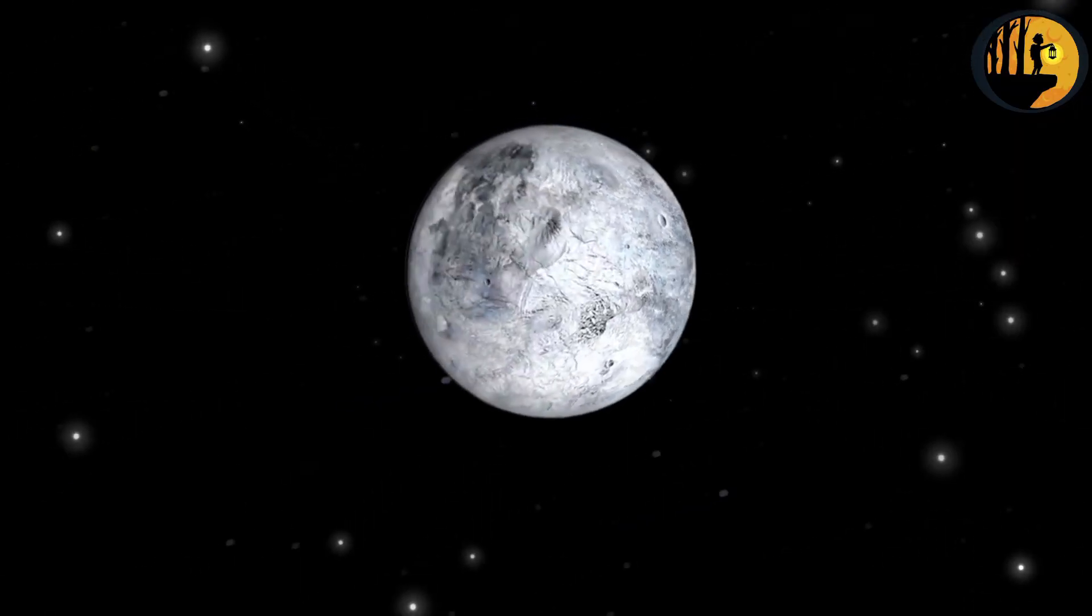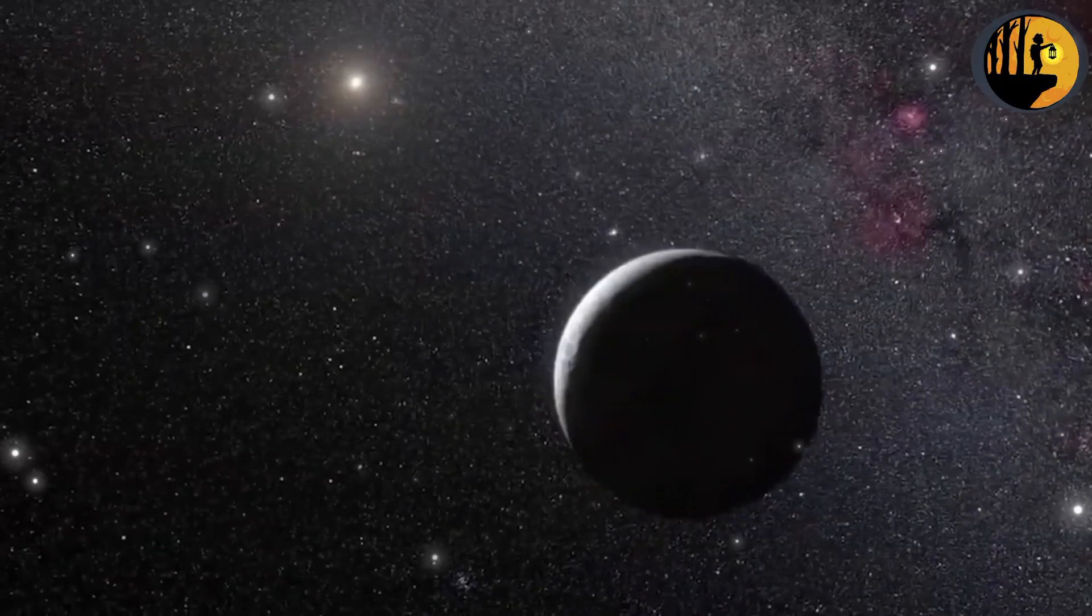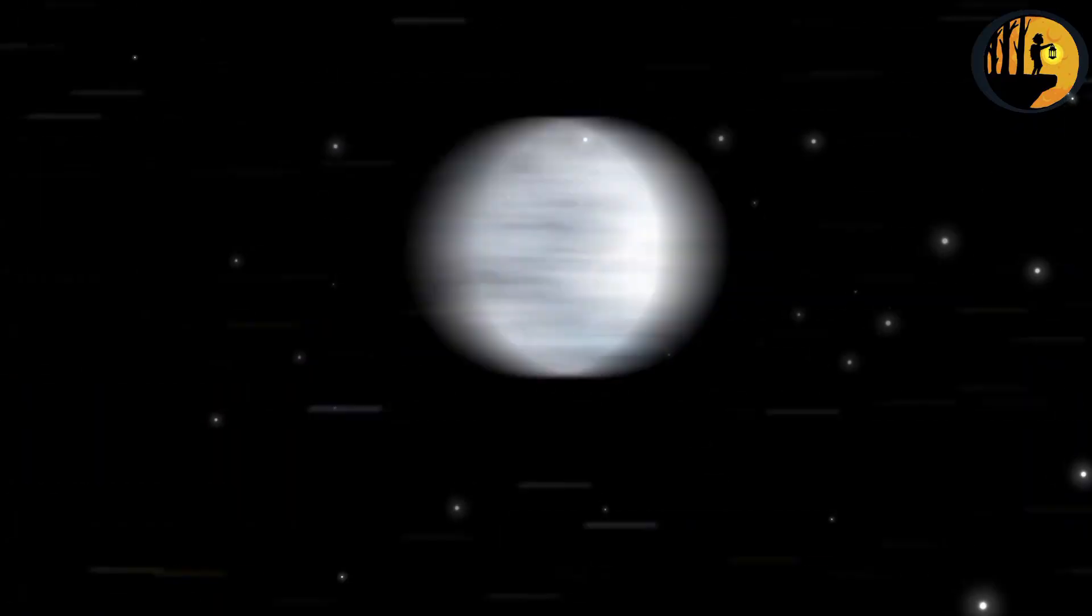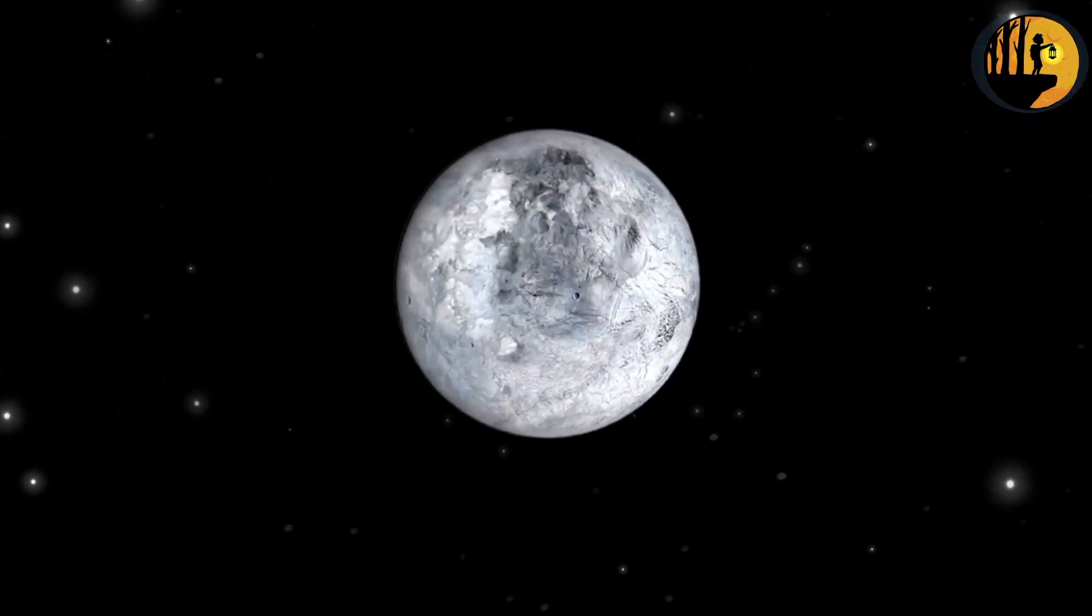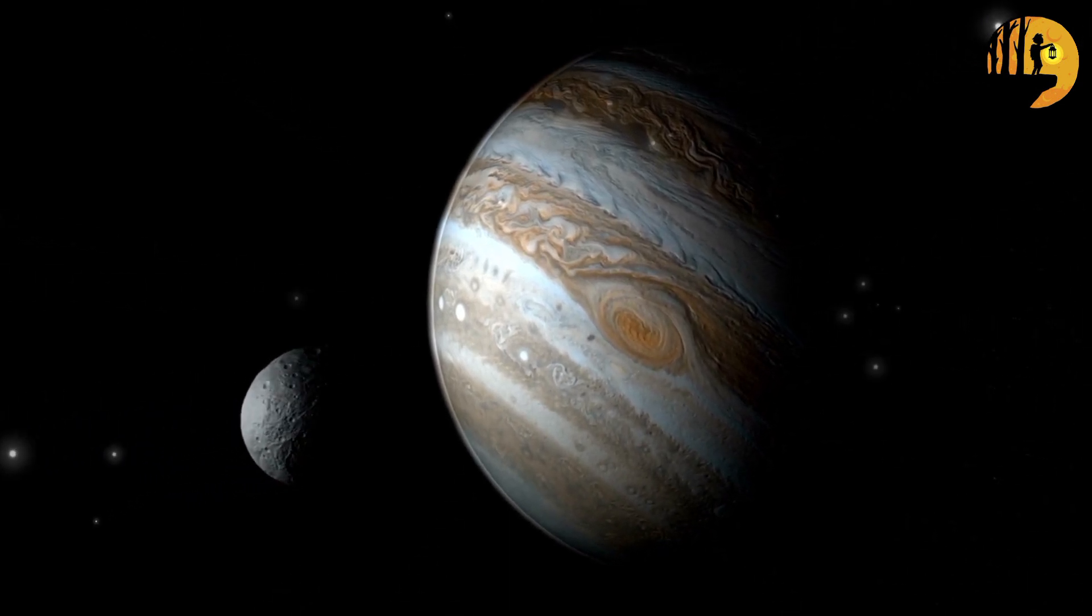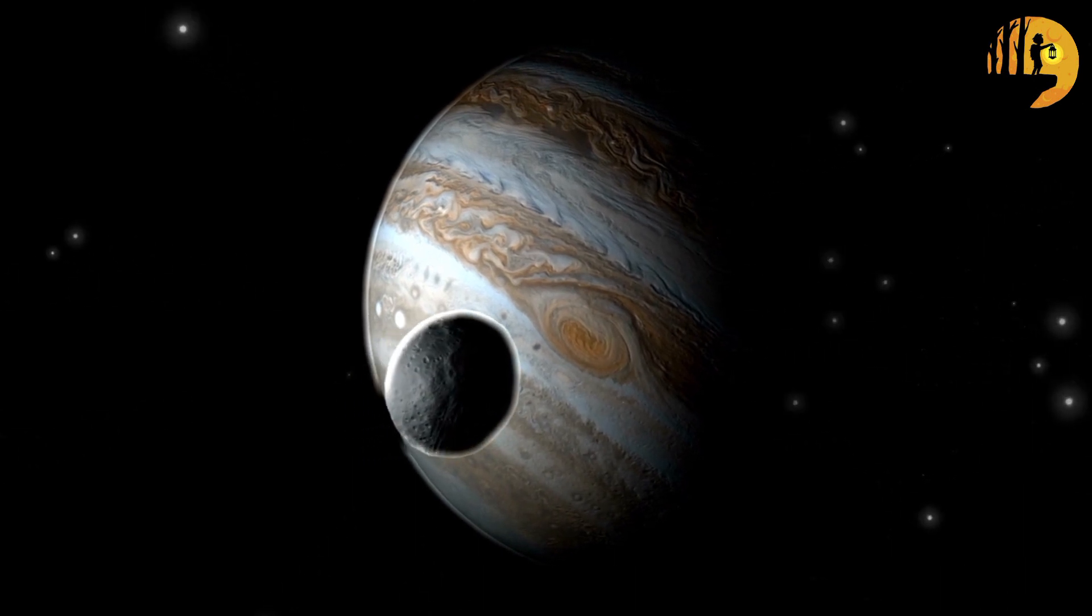Pluto's orbit is unique as it resides in the Kuiper Belt, a region in the outer reaches of our solar system beyond Neptune. This region is home to numerous other icy objects, and Pluto's orbit is tilted and elliptical, unlike the more circular orbits of the inner planets. This orbital path contributes to its distinct characteristics and its classification as a dwarf planet.